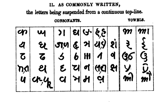Among the three scripts widely used in the Hindi belt, Kaithi was widely perceived to be neutral, as it was used by both Hindus and Muslims alike for day-to-day correspondence, financial, and administrative activities, while Devanagari was used by Hindus and Persian script by Muslims for religious literature and education.